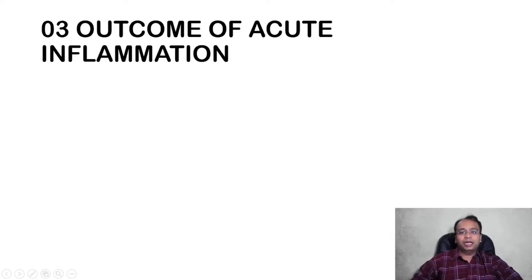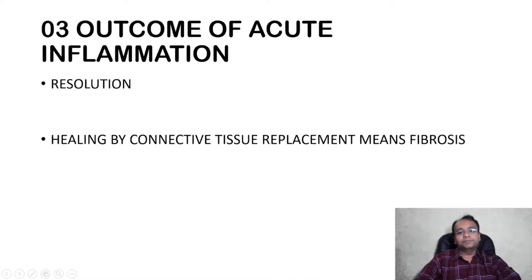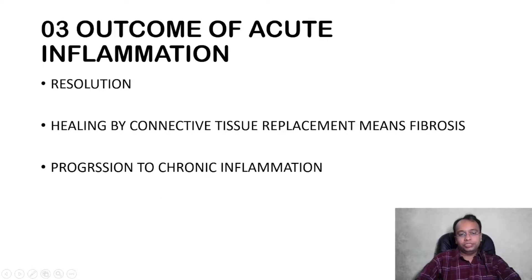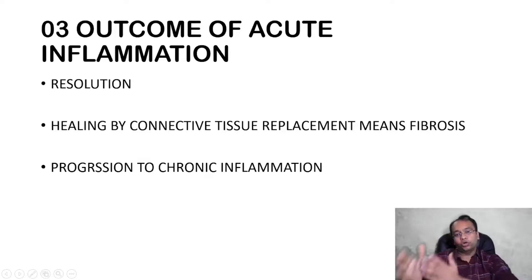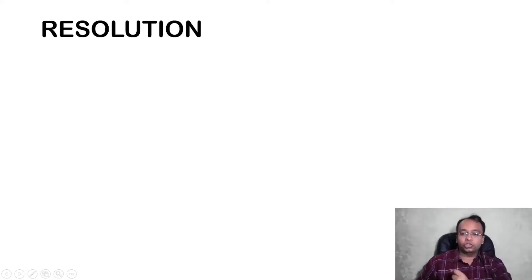Basically there are three outcomes of acute inflammation. One is resolution, the second one is healing by fibrosis, and the third one is progression to chronic inflammation. So first of all let's talk about the resolution outcome.